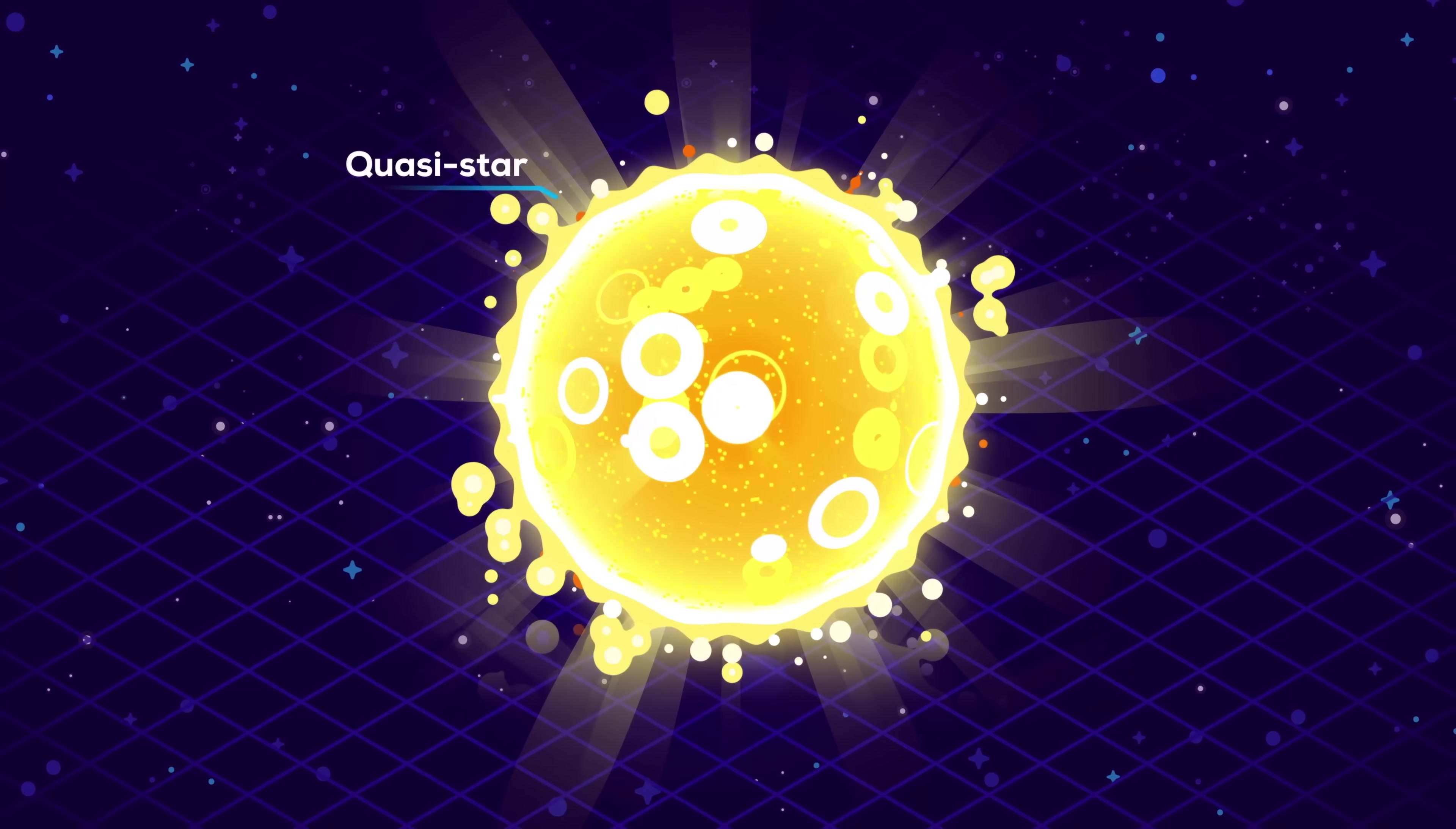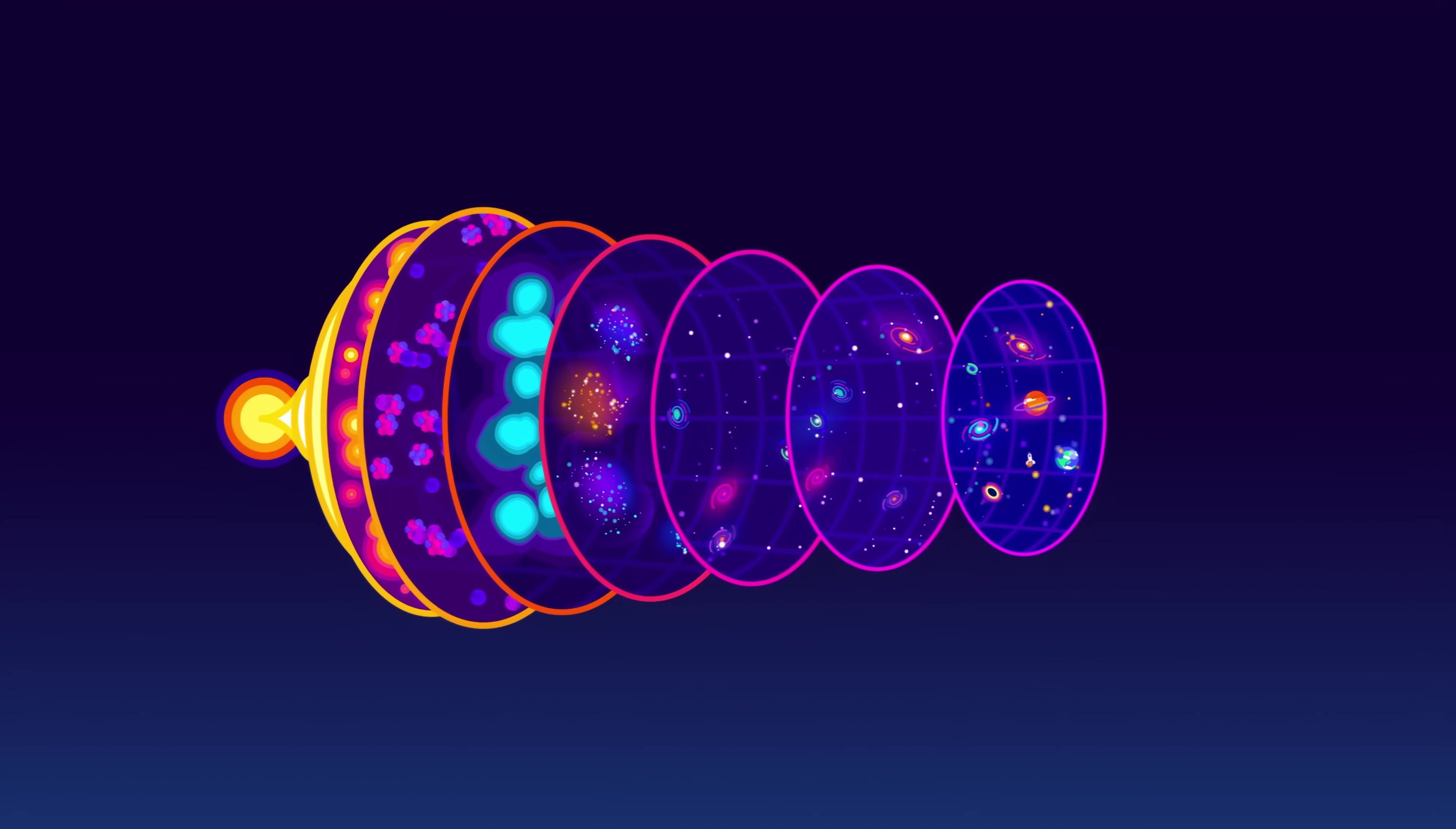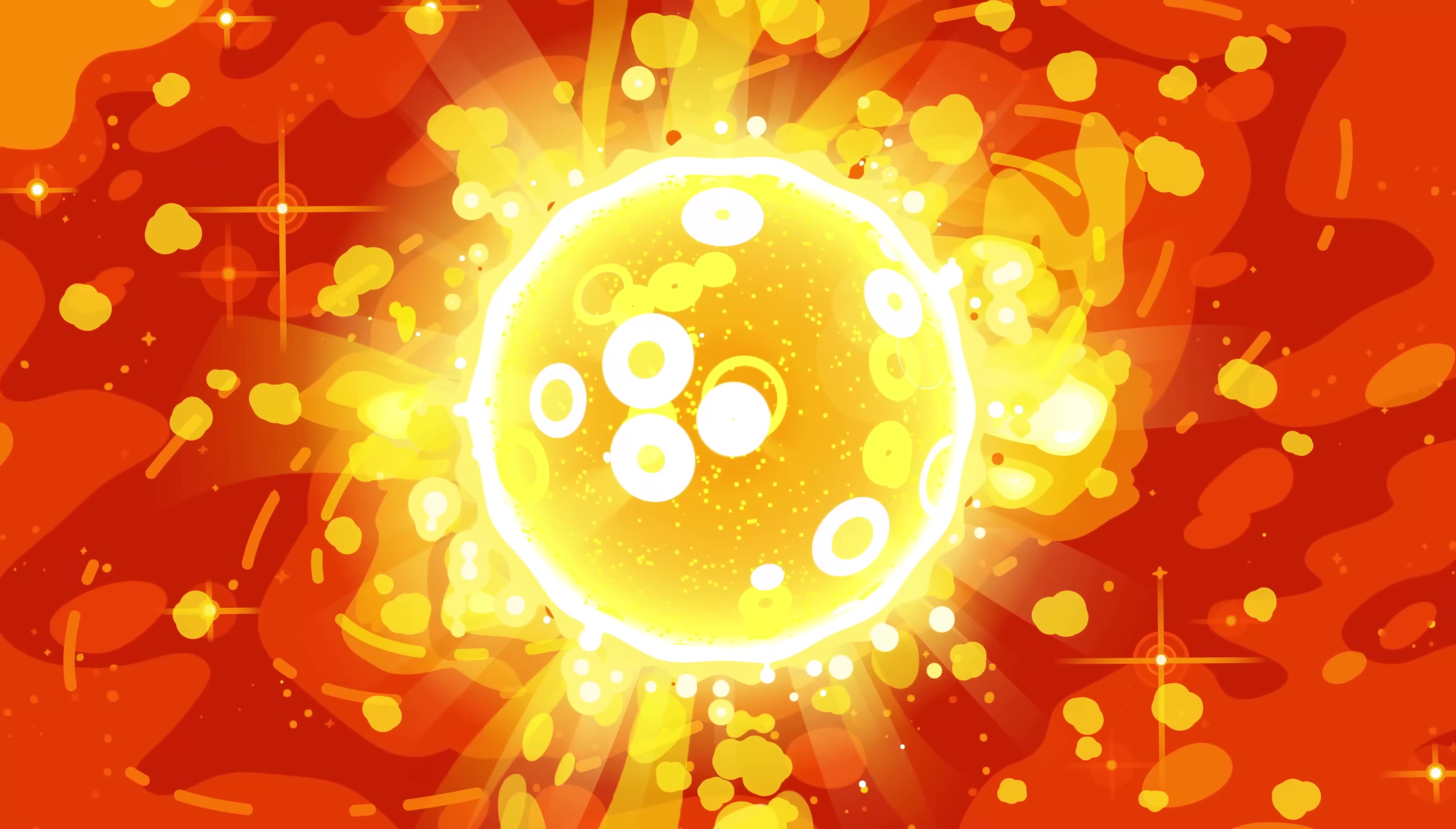Quasi-stars. To get a sense of scale, we can compare them to the largest stars that exist today. Our sun is like a grain of sand next to them. We don't know if quasi-stars actually existed, but they're an interesting concept when it comes to supercharging black hole development. The idea is that the matter in the early universe was so dense that quasi-stars could grow to thousands of times the mass of our sun.